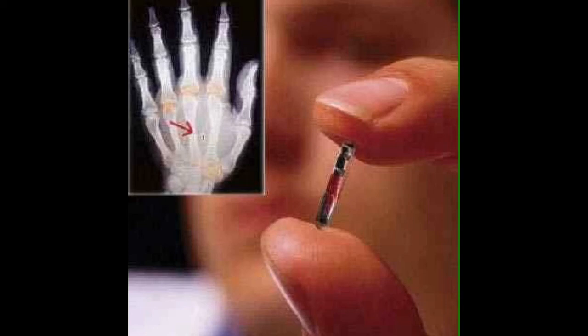This chip, this RFID chip or whatever it might be is going to start to be implemented. It's already out, people have already taken it, but it's going to be more common right before the rapture. I think that's why God is going to take his bride right before the Antichrist tries to chip everybody.